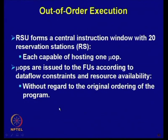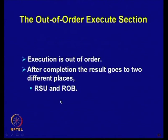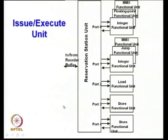Using the data flow concept, out-of-order execution is performed. The issue and execute unit has MMX functional units, a jump functional unit, and an integer functional unit — three such units accessed via ports 0, 1, and 2, then the load/store unit via port 2. These are the reservation station units.